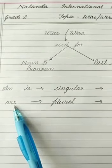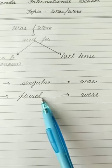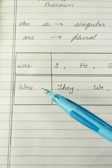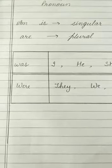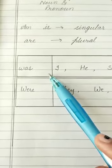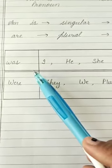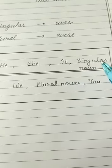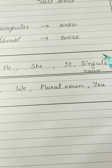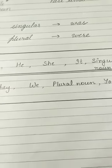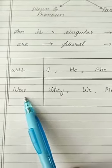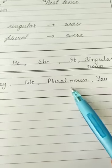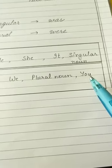And just as 'are' is used for plural in present tense, similarly 'were' is used for plural in past tense. So to summarize: 'was' and 'were' are used for past tense — for the time that has already passed. 'Was' is used with singular nouns or pronouns, for example: I, he, she, it, or any singular noun like a child's name, Reena, or 'a dog'. 'Were' is used with plural nouns or pronouns, such as 'they', 'we', plural nouns like 'the boys', or 'you' — with 'you' we always use 'were'.